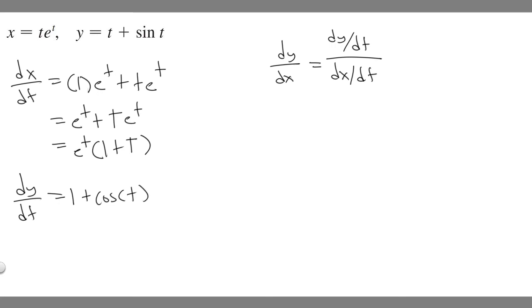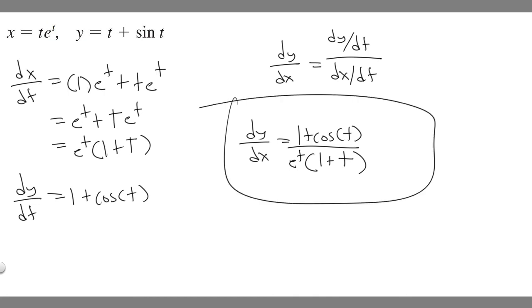Now we've got both dx/dt and dy/dt. We can plug it in. So dy/dx - dy is 1 plus cosine of t over dx/dt, which we know is e to the t multiplied by 1 plus t. So dy/dx equals 1 plus cosine of t over e to the t times 1 plus t. This is your answer, and hopefully you found this useful.